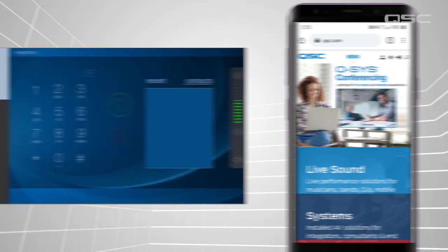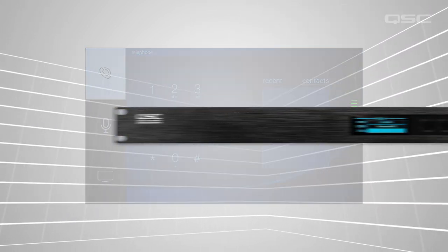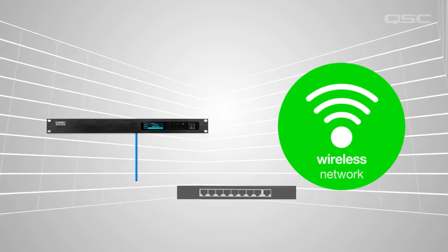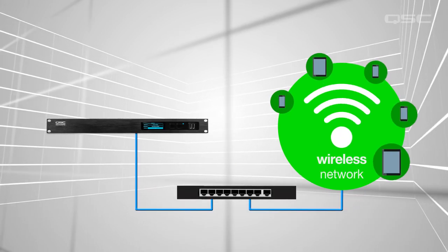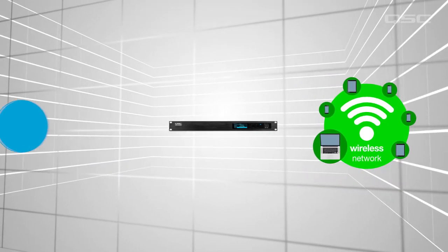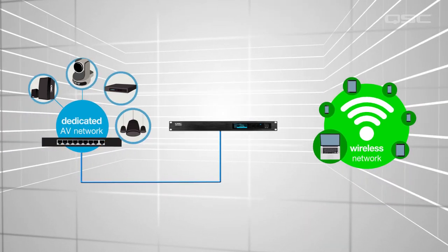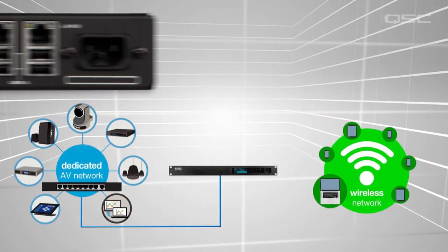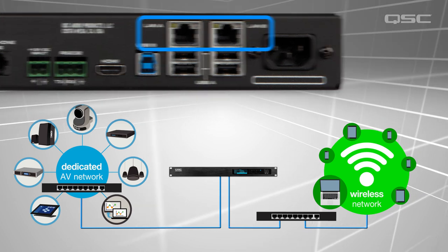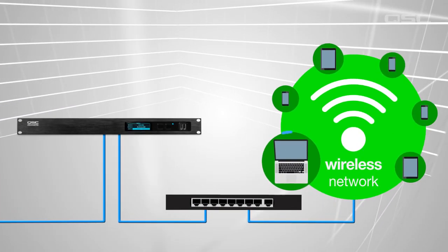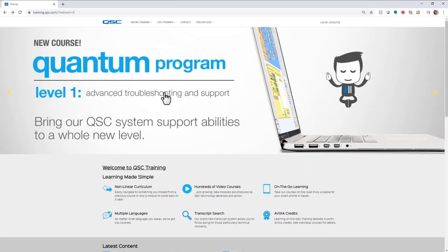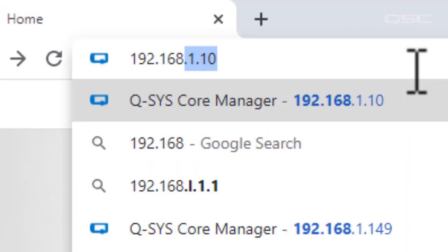That's exactly what we're going to do with QSYS UCI. To get started, your QSYS core needs to be connected to the same Wi-Fi network used by your meeting room participants. If your core is using a dedicated AV network that's not part of a larger corporate Wi-Fi network, you could always use one of the available unused LAN ports on your core to make this connection. An easy way to test this out would be to connect your phone or laptop to the same Wi-Fi network and then attempt to open Core Manager from a browser using your core's IP address.